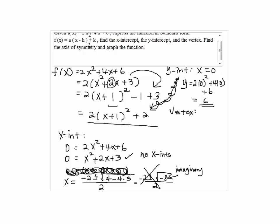The vertex is read from the standard form, which is 2(x + 1)² + 2. So the vertex will be (-1, 2), which is the opposite of this positive 1 comma 2, which is the one outside.